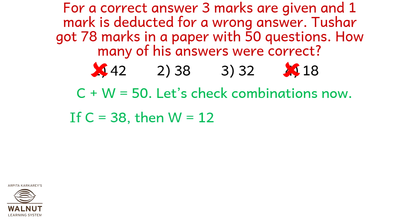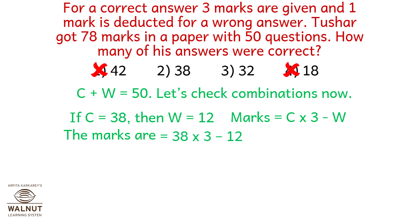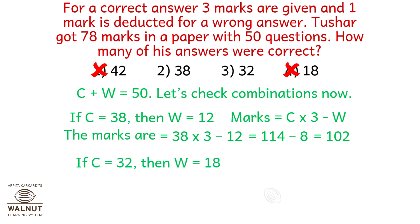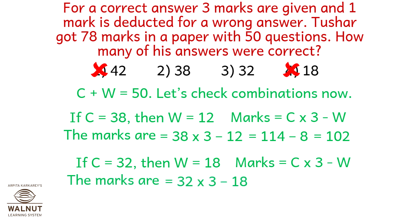Let's check: if C is 38 then W is 12, and the math comes out to 102 — nope. If C is 32, W is 18, marks comes out to be 78. Perfect, so we have the correct answer as option number 3.